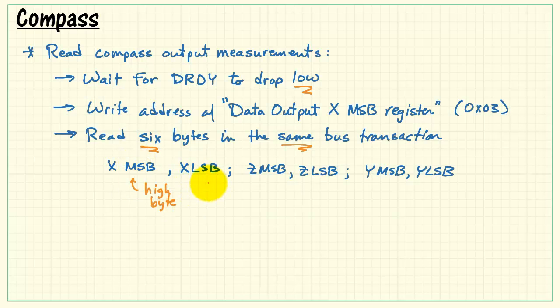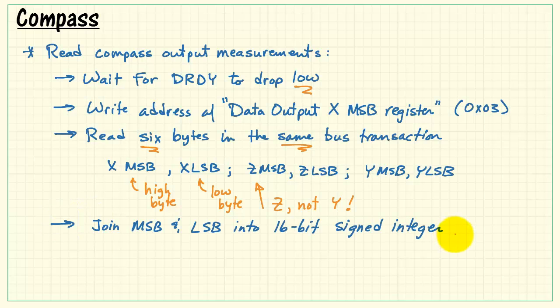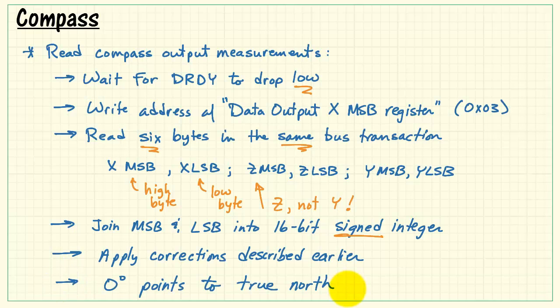You will get them in the order of the most significant byte, that is the high byte, least significant byte, low byte for X, and then for Z-axis. It's important to recognize that it's not an order of X, Y, and Z, and then Y comes last. Join the most significant byte and the least significant byte together into a 16-bit signed integer, and then apply the corrections that I described earlier.